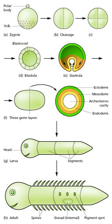Morphogenesis relates to the formation of three-dimensional shape. It mainly involves the orchestrated movements of cell sheets and of individual cells. Morphogenesis is important for creating the three germ layers of the early embryo — ectoderm, mesoderm, and endoderm — and for building up complex structures during organ development.